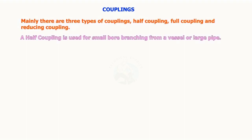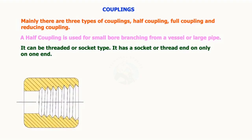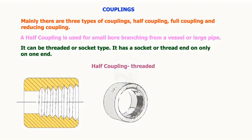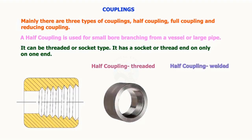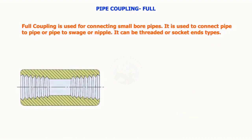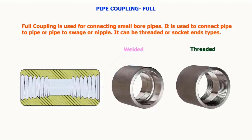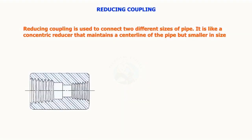Mainly there are three types of couplings: half coupling, full coupling, and reducing coupling. A half coupling is used for small bore branching from a vessel or a large pipe. It can be threaded or socket type, with a socket or thread end only on one end. Full coupling is used for connecting small bore pipes, to connect pipe to pipe or pipe to swage or nipple. Reducing coupling is used to connect two different sizes of pipes; it is like a concentric reducer that maintains the centerline of the pipe but is smaller in size.